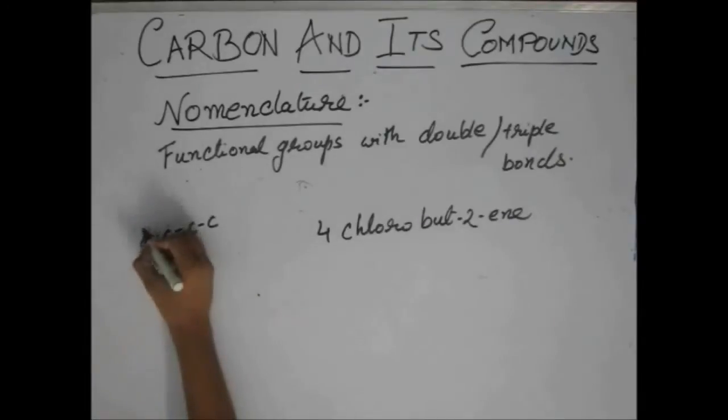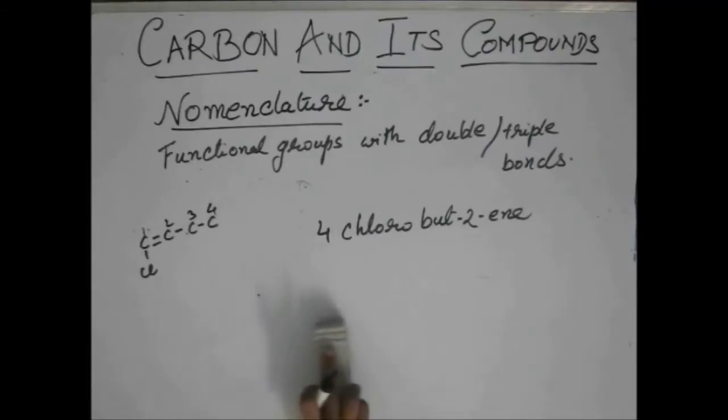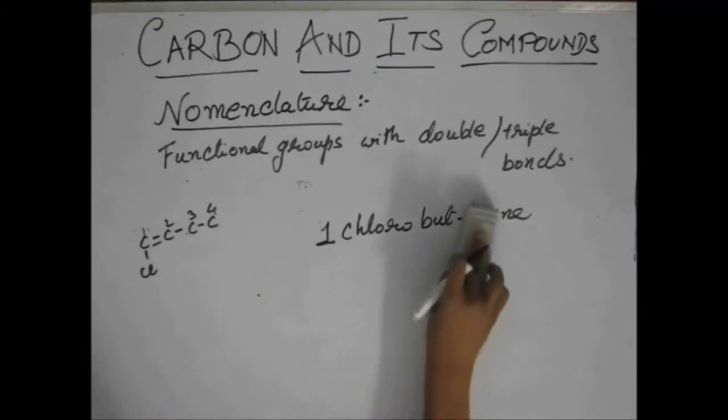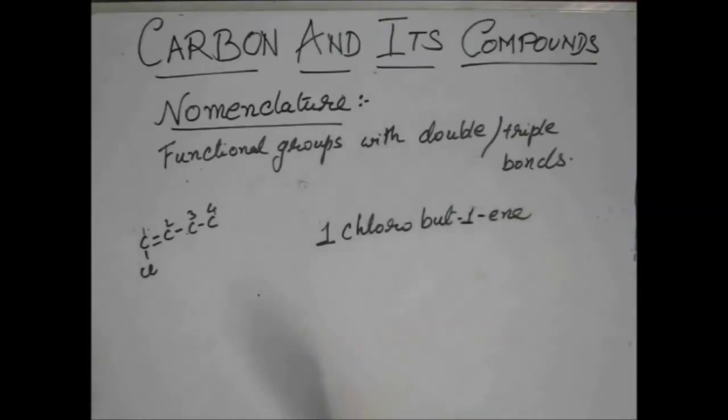We started from one, two, three, four. So, now, chlorine is at one. So, it's 1-chloro-bute-1-ine. Okay?